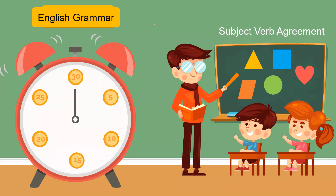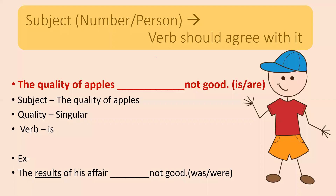So first of all we will see some rules — some rules of subject-verb concord which are very important. In this topic the main important thing is that when you see the verb forms.